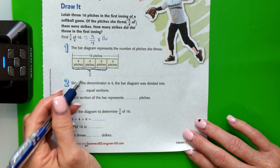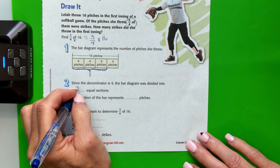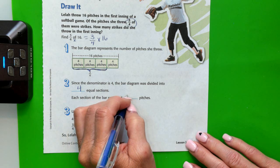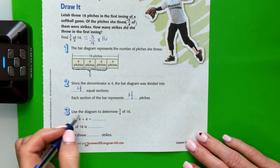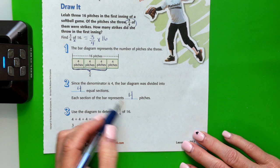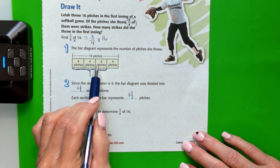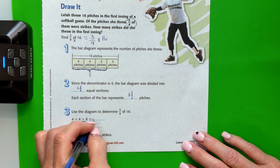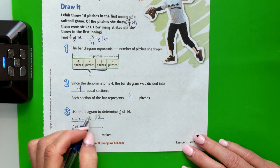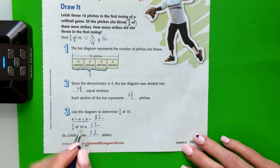So how many pitches is that? Since the denominator is 4, the bar diagram was divided into 4 equal sections. And each section of the bar represented 4 pitches. So we're going to use the bar diagram to determine 3 fourths of 16. They wrote 4 plus 4 plus 4. So 4 times 3 is 12. So 3 fourths of 16 is 12. So Layla threw 12 strikes.